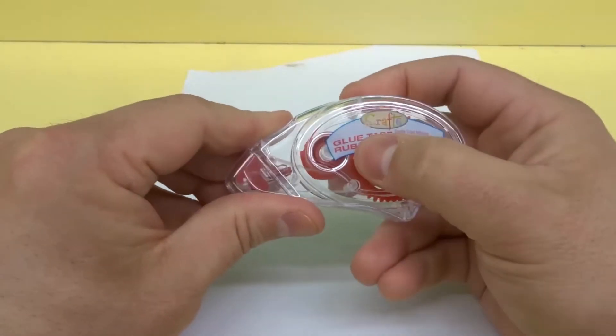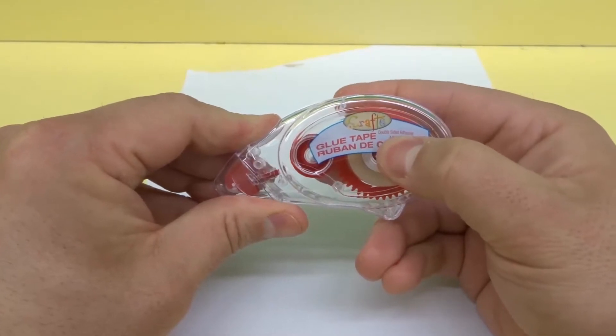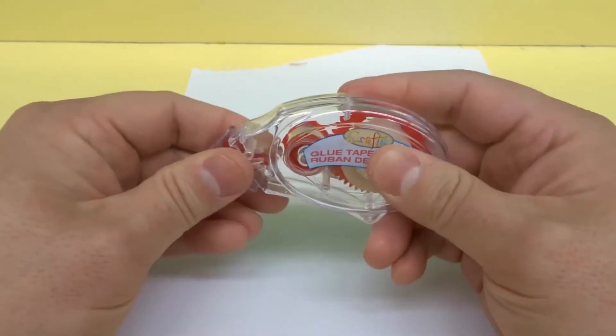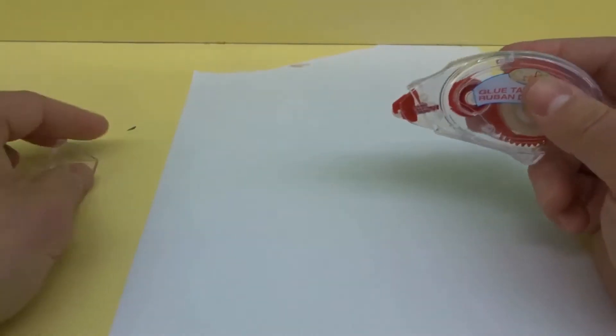As you can see right here, I have some glue tape, and this is double-sided adhesive. It works really well at holding two things together.